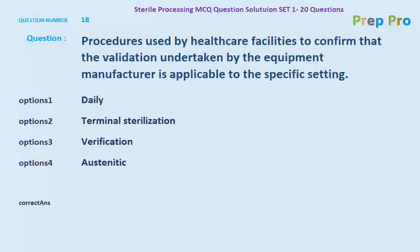Question number eighteen: procedures used by healthcare facilities to confirm that the validation undertaken by the equipment manufacturer is applicable to the specific setting. Options: daily; terminal sterilization; verification; and a fourth option. The correct answer is terminal sterilization — it is the procedure used by healthcare facilities to confirm that manufacturer validation is applicable to the specific setting.